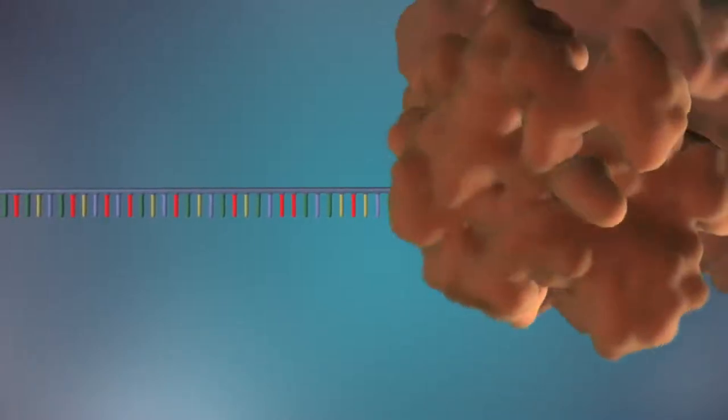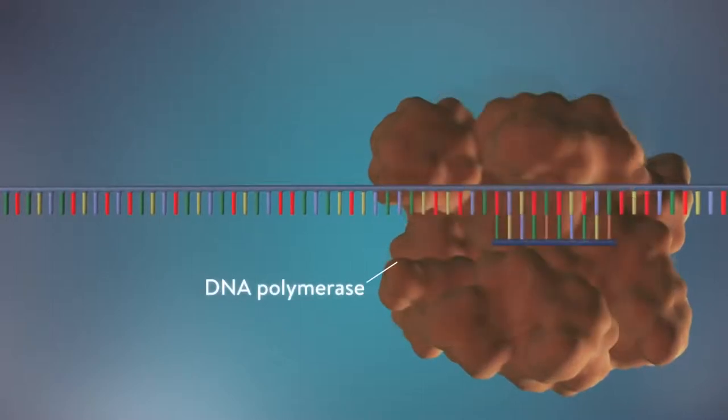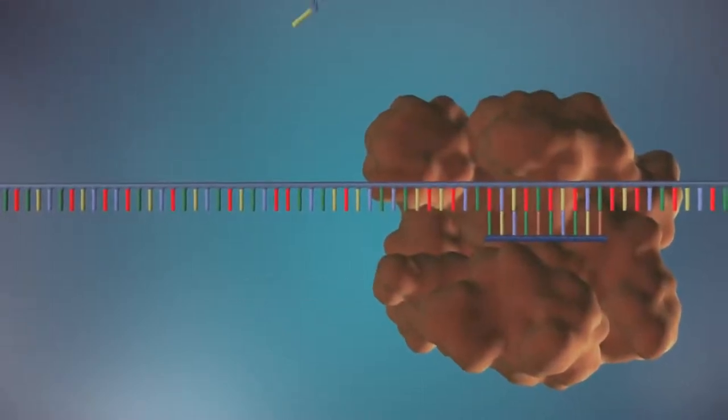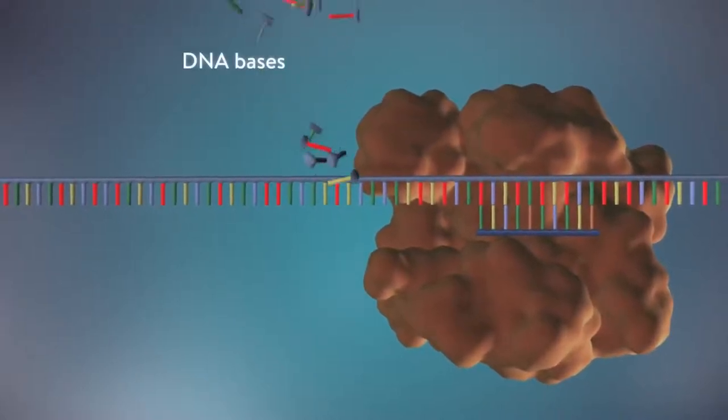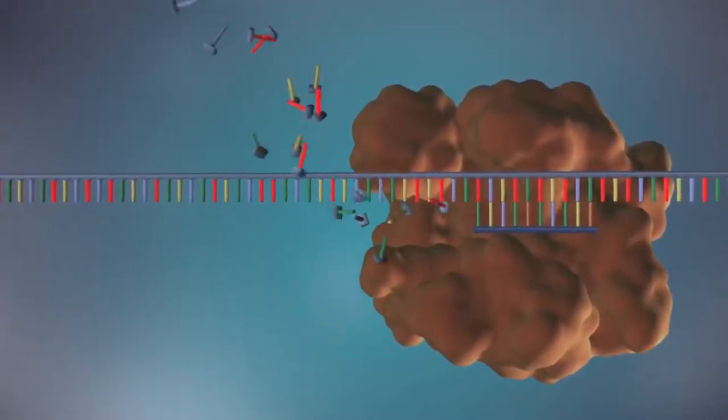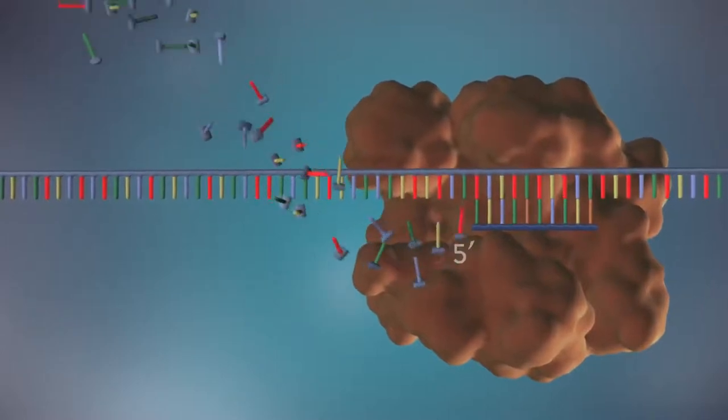An enzyme called DNA polymerase binds to the primer and will make the new strand of DNA. DNA polymerase can only add DNA bases in one direction, from the five prime end to the three prime end.